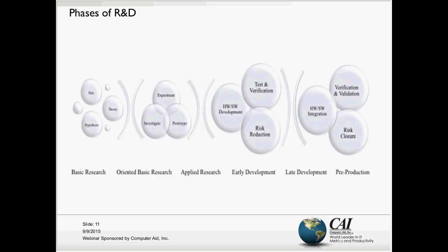Basic research is sometimes referred to as theoretical or fundamental research. Its objective is the acquisition of new knowledge without a real defined goal or expected application of that knowledge. Typically basic research includes activities such as developing a hypothesis, developing theories or ideas. When you get into oriented, applied, or directed research, it's more expected to produce knowledge that will serve as background material for future applied research and eventual development activities. Applied research really aims to gain knowledge to address a known technical or scientific goal, and it includes activities like investigations, prototyping, and experimentation.